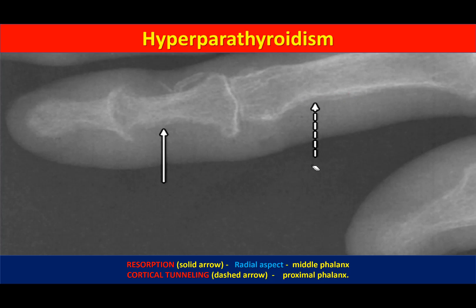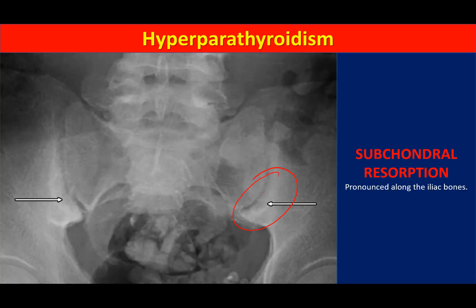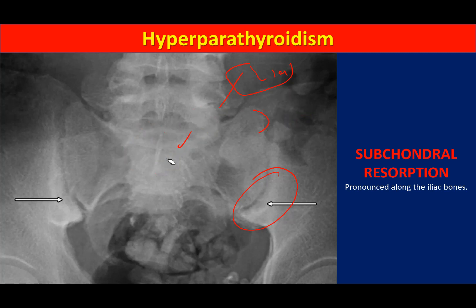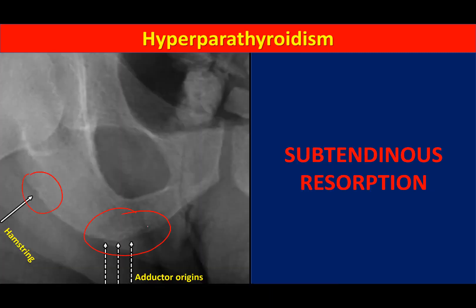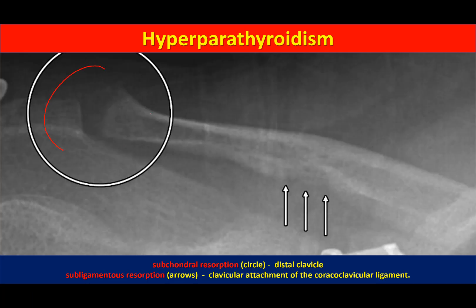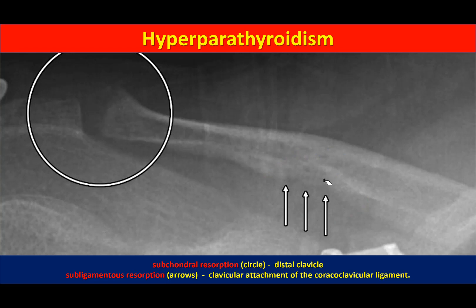Subchondral resorption can be seen at the sacroiliac joint, which has two components: a ligamentous joint and a synovial joint. The anteroinferior aspect is synovial, and bilateral resorptions are seen there. Subtendinous resorption is visible at the adductor origin and hamstring origin at the ischial tuberosity and ischiopubic rami. In the acromioclavicular joint, subchondral resorption is seen at the tip of the clavicle, along with subligamentous resorption at the coracoclavicular ligament attachment.